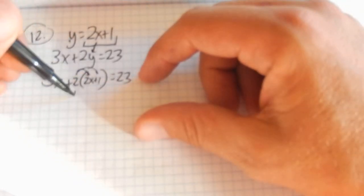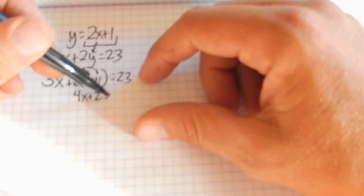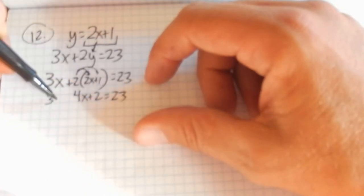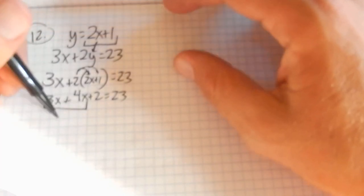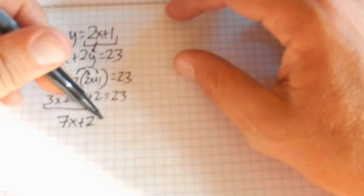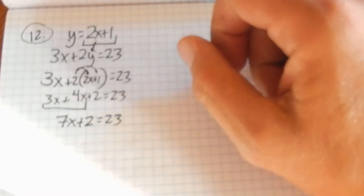Distribute that 2. 4x plus 2 is equal to 23. I still have this 3x plus out here. Combine some like terms. That gives me a 7x. I'm going to keep going.